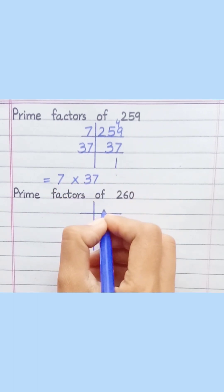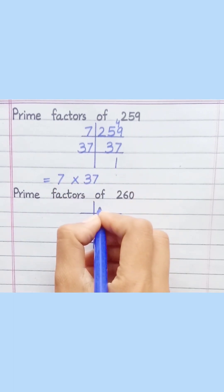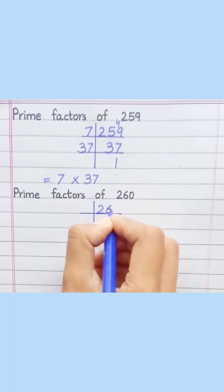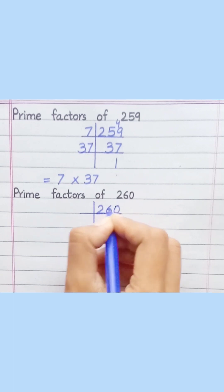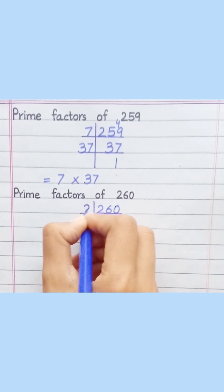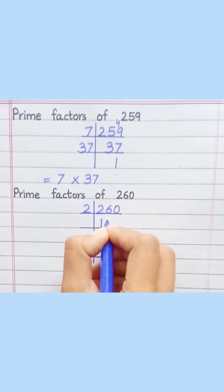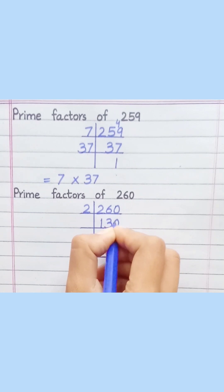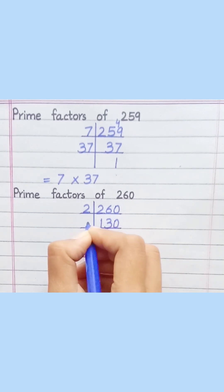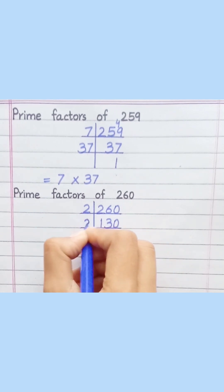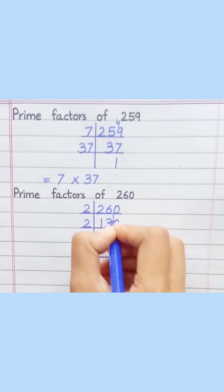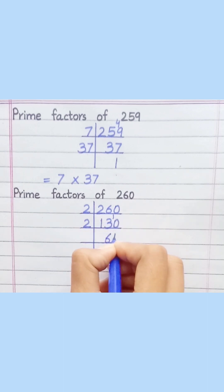Prime factors of 260. 2 ones are 2. 2 threes are 6. 2 zeros are 0. 2 sixes are 12. 2 fives are 10.